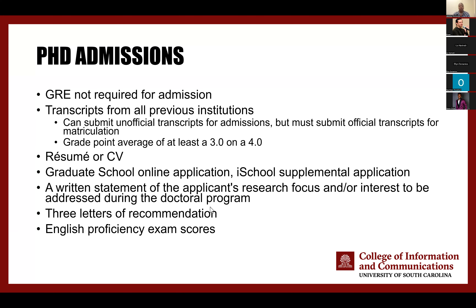You will also need at least a 3.0 GPA on a 4.0 scale. If you have questions about your GPA or may not be there, we do have ways around that — just reach out to me. We'd also like a copy of your resume or CV to get an overview of your educational and professional experience. The application is a two-part process: first the graduate school online application, and then an iSchool supplemental application with essay questions about your interest in the program.